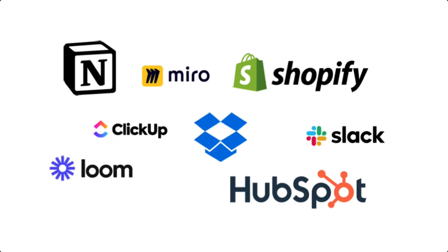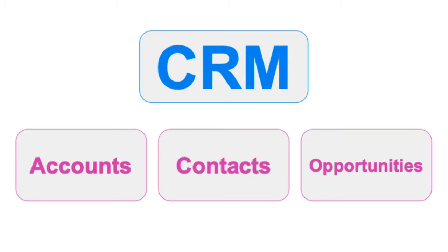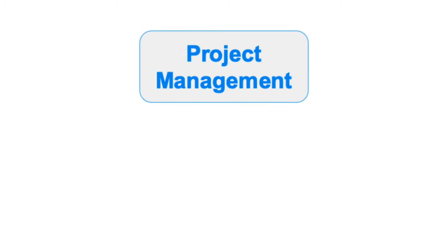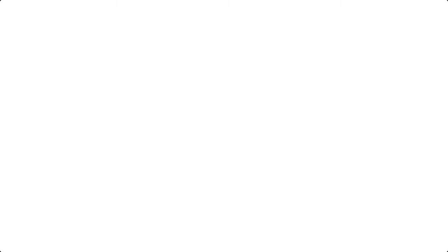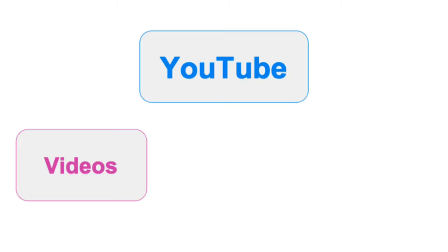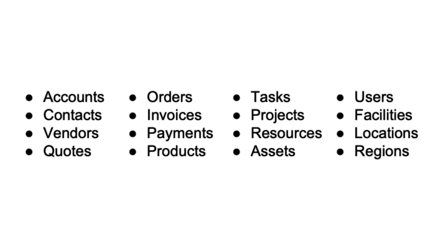But behind almost every business application you know and love is a database. If you're a salesperson, you probably use a CRM tool, which uses a database to store important information about prospects, the people who work at companies, and the deals you're tracking. If you're a project manager, you use a project management tool to track projects, tasks, and deliverables. Even applications like YouTube are storing videos, playlists, subscribers, and viewer data. And if you think about the applications you use every day, you'll start to notice a pattern of similar objects that are related to one another.